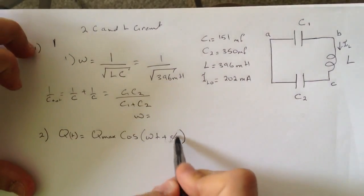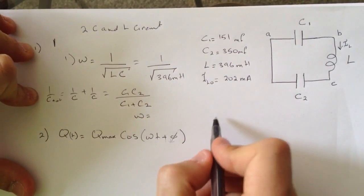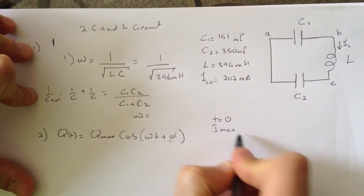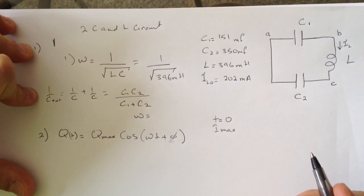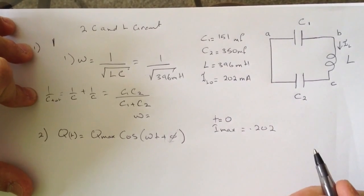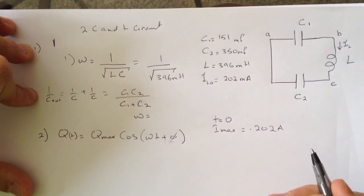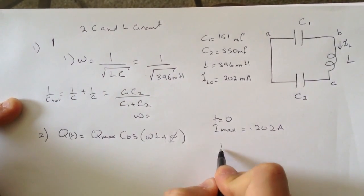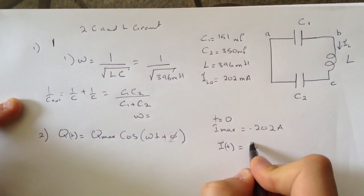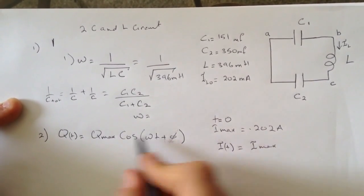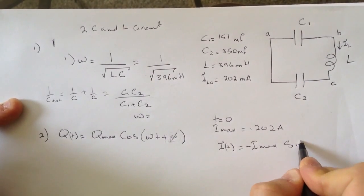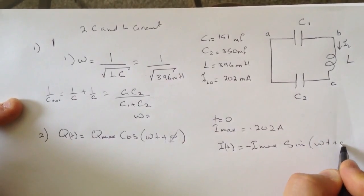How do you figure out this part? What they gave us is that at time equal zero, we have I max. I max was 0.202 amperes. And then what's the rule for the I? I(t) is when you differentiate this one, you'll get I max times sine of omega t plus phi.